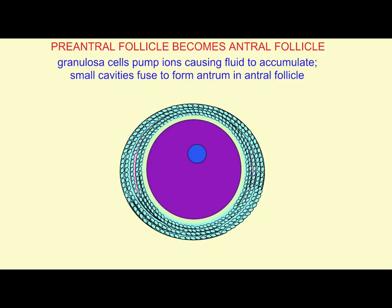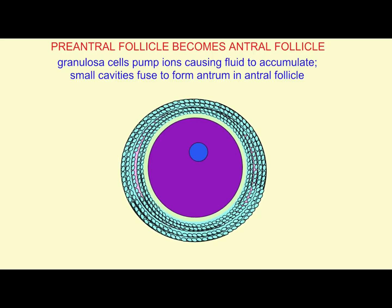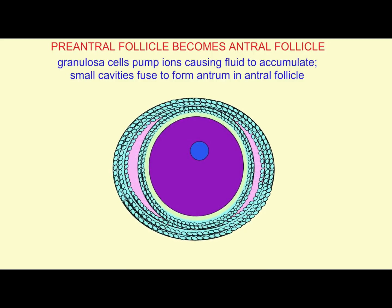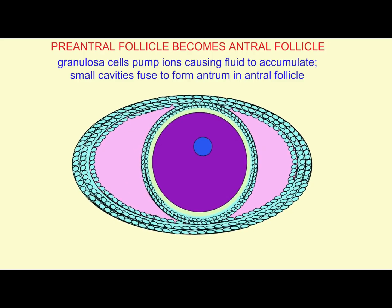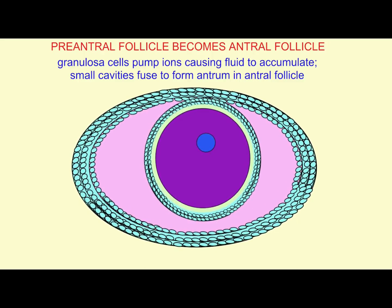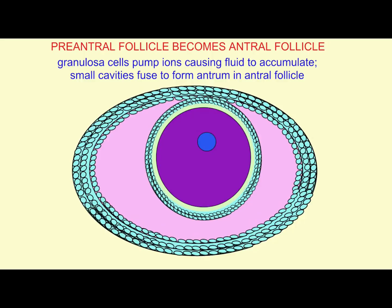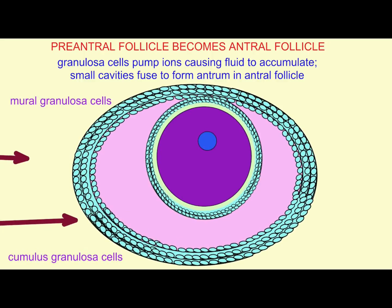Six to eight months after a primordial follicle was activated to become a primary follicle, the primary follicle has matured to produce an antral follicle. In antral follicles, the granulosa cells have pumped ions in a way that causes water to accumulate in cavities.